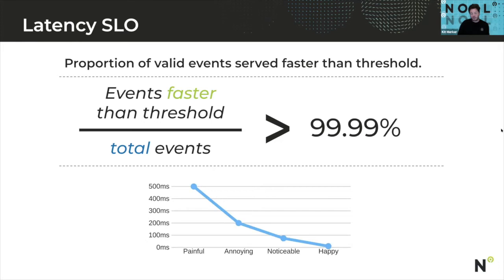The thresholds can be defined based on the user experience. So a very fast response, you might call that a happy experience, and a very slow response, you might call that painful. By looking at these different thresholds across the distribution of events within your system, it gives you a much richer picture of what users are experiencing.